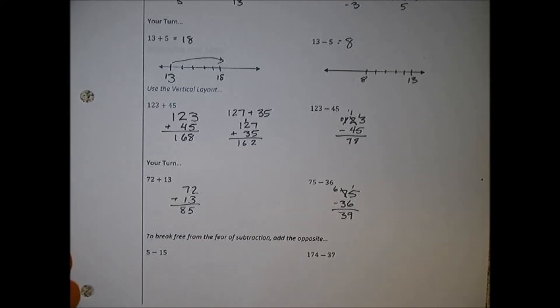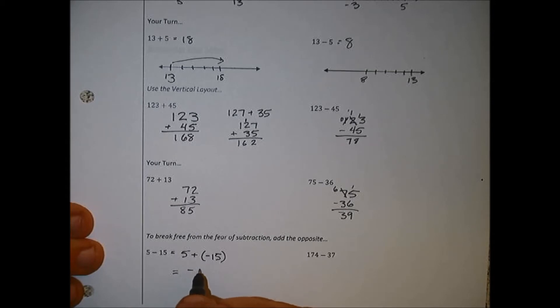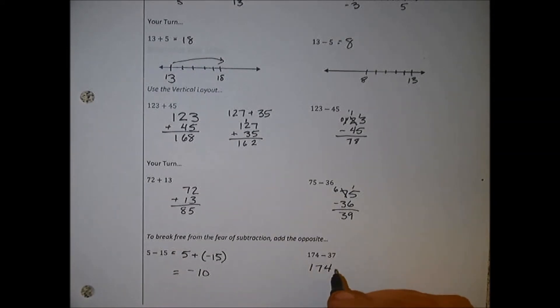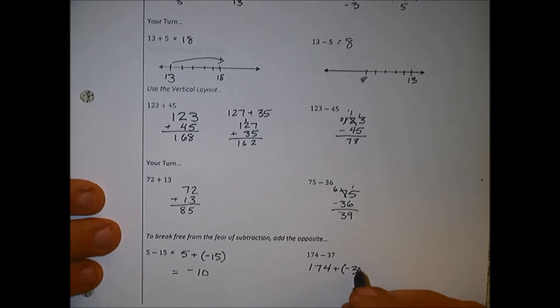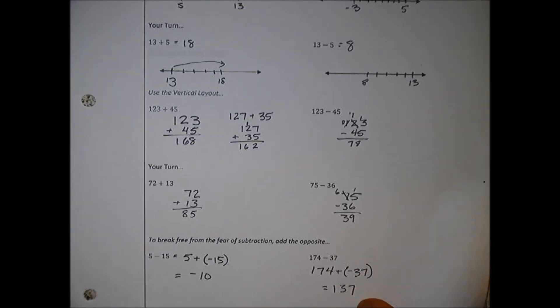Some people get pretty good at adding numbers really quickly. If you don't like subtraction, no reason to fear. We can go 5 plus negative 15, that means the same thing. Sometimes you'll run into this case where you're adding a negative, you can just make that subtraction. I can visualize this out: I start at 5, move back 15, that's going to put me at negative 10. Same thing here, maybe I don't like subtracting 174 minus 37. Instead of subtracting 37, maybe I want to add a negative 37, and I can get a better visual on it. When I add that negative 37, I'm going to get 137.